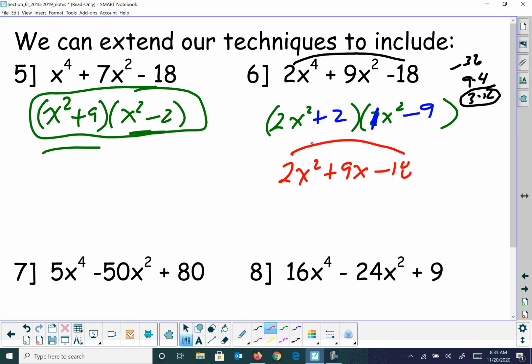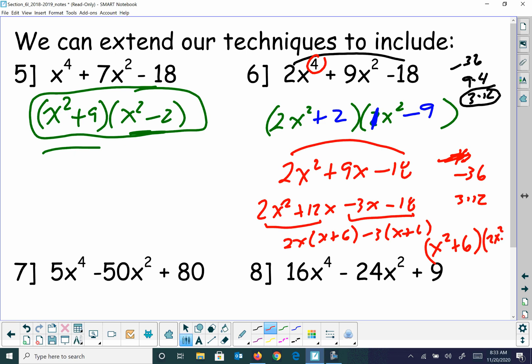So I'm going to factor this by my grouping method. That's negative 36. And again, I think the 3 and 12 are going to work nicely. So I get 2x squared plus 12x minus 3x minus 18. And then I'm going to factor out a 2x on those. So it gives me x plus 6. And I'm going to factor out a negative 3 there. And that's x plus 6. So then my overall answer is going to become x plus 6. But because this was to the fourth, I'm going to make it x squared plus 6 and 2x squared minus 3. So remember, I just kind of replaced this back in because it originally started as x to the fourth.